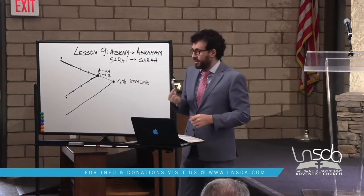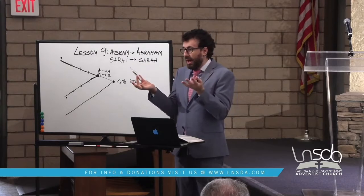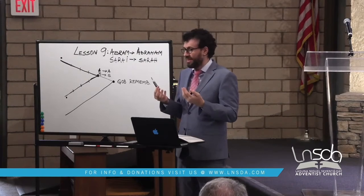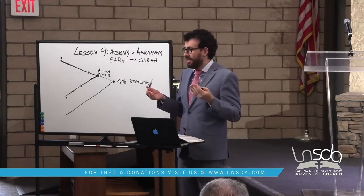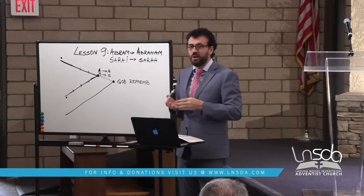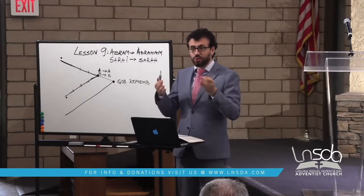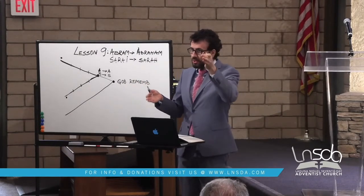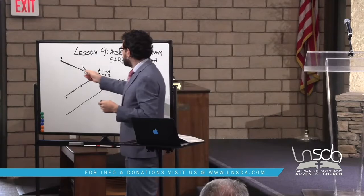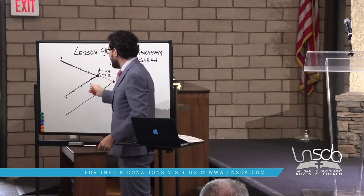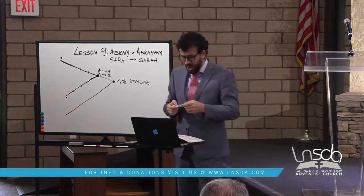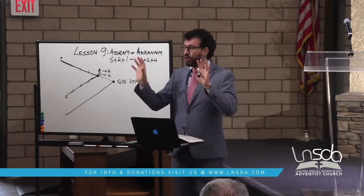The reason I'm pointing out the chiastic structure is to make your life easier and your study more interesting. I'm trying to train us in a Hebraic way of looking at scriptures. Just the way the Greek mind is trained to go from A to B to C, a Jewish mind is trained to go from A to B to C to D to E and then go backwards — the focal point is right in the center. So let's look at the story of the name change.